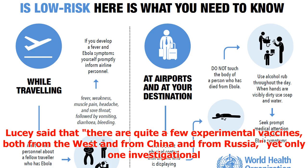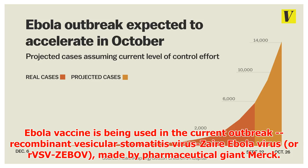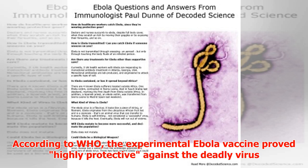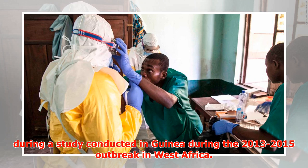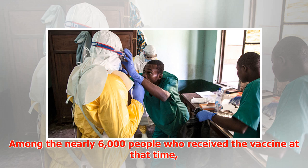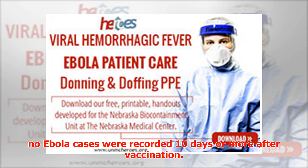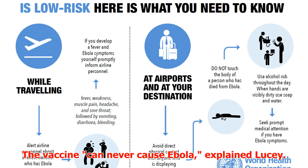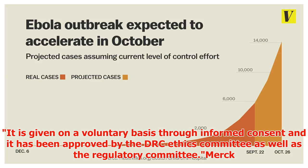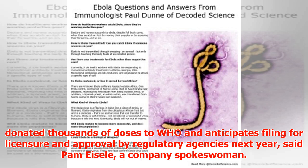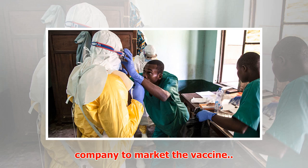Lucey said there are quite a few experimental vaccines from the West, China, and Russia, yet only one investigational Ebola vaccine is being used in the current outbreak: recombinant vesicular stomatitis virus Zaire Ebola virus, or rVSV-ZEBOV, made by pharmaceutical giant Merck. According to the WHO, this experimental vaccine proved highly protective during a study in Guinea during the 2013–2015 West Africa outbreak. Among the nearly 6,000 people who received the vaccine, no Ebola cases were recorded 10 days or more after vaccination. The vaccine cannot cause Ebola, is given on a voluntary basis through informed consent, and has been approved by the DRC ethics and regulatory committees. Merck donated thousands of doses to the WHO and anticipates filing for licensure and approval by regulatory agencies the following year; licensure, if granted, would allow the company to market the vaccine.